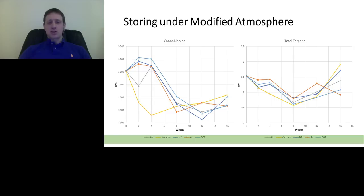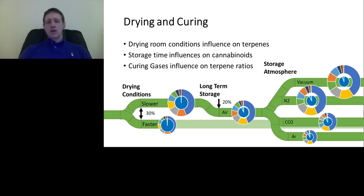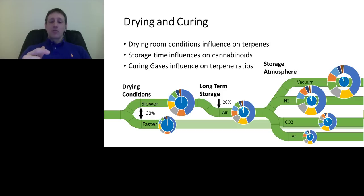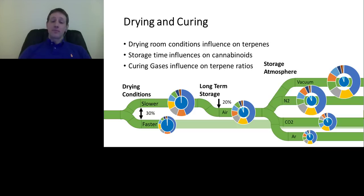Looking at the terpene rings for different atmosphere packaging — vacuum, nitrogen, CO2, and argon — the colors of the ring segments change. The blue and yellow remain the most dominant, but the secondary terpene order shifts depending on atmosphere. So we not only see a change in overall terpene presence, but also in the relative ratios of those terpenes. This means we seem to have a handle on changing the flavor of the cannabis cultivar.